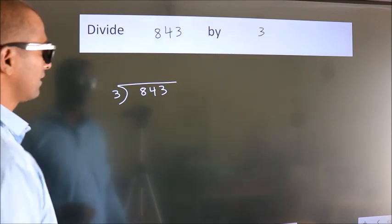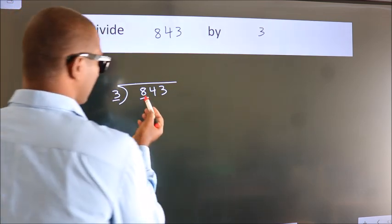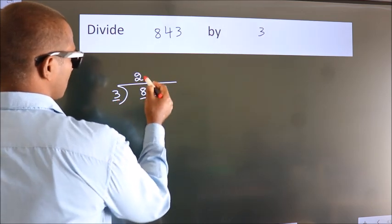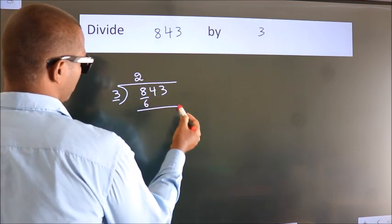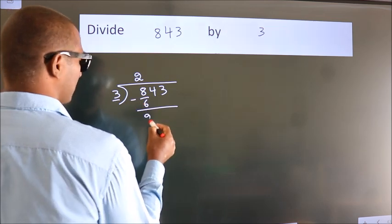Next, here we have 8, here 3. A number close to 8 in the 3 table is 3 times 2, which is 6. Now we should subtract. We get 2.